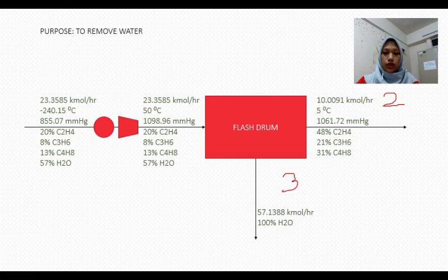From here, you can see in stream 2 there is only ethylene, propylene and butylene produced. And the water only goes out in stream 3. But actually, there is a little amount of water in stream 2, but the number of water is very small so that we don't include it here. The water that is separated in stream 3 is in liquid state, with its molar flow rate of 57.1388 kmol per hour, where it is 100% water. There is no other compound here. Then in stream 2, there is 10.0091 kmol per hour molar flow rate at the temperature of 5 degrees Celsius and the pressure of 1061.72 mmHg. You can see the composition of propylene, butylene and ethylene there.